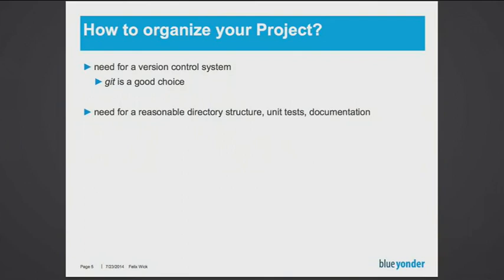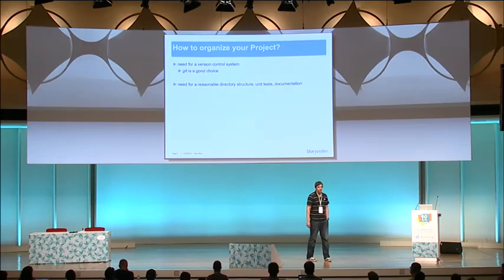Now you have your environment, so you can really start with your project. The first thing you need is, of course, a version control system — for this talk and the demonstration I'll use git, though there are many other good tools. After that you need a reasonable directory structure, and you need tests and documentation. These are all things you have to take care of, ensuring a good folder structure and the right tools.